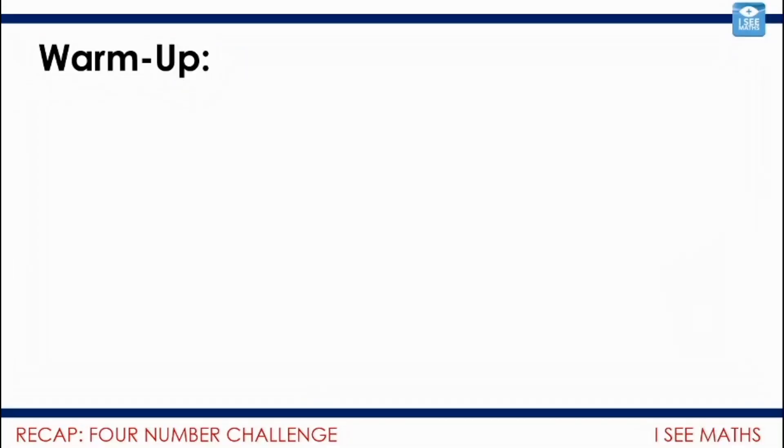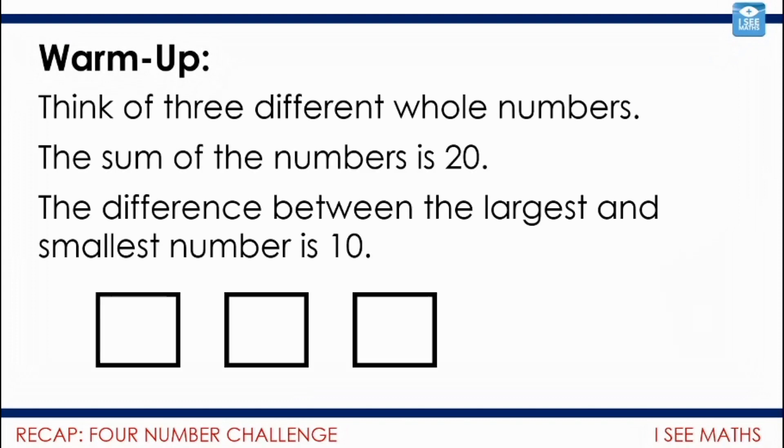We're going to get warmed up with a task that's quite similar to the one that you did yesterday. Think of three different whole numbers. The sum of the numbers is 20, the difference between the largest and the smallest number is 10. See if now you can be really fluent in finding a system to find all the possible answers. There's your challenge. Pause the video and have a go.